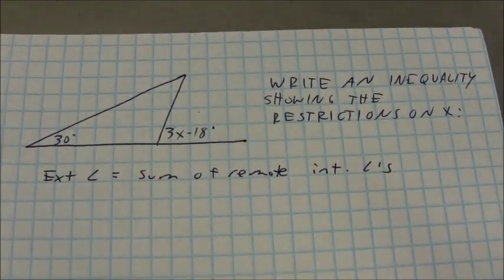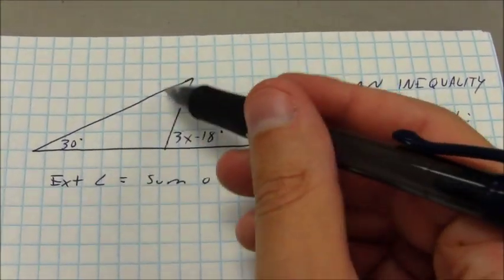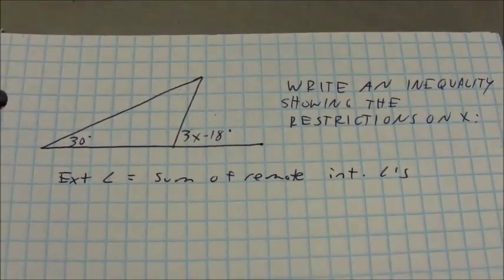I can't have a negative angle, so as a result, if this angle is equal to the sum of these two, individually these two angles both have to be smaller than the exterior angle.